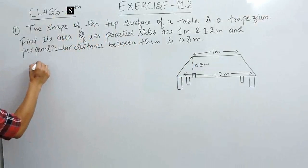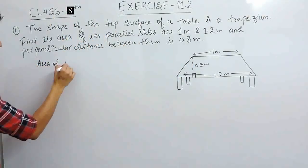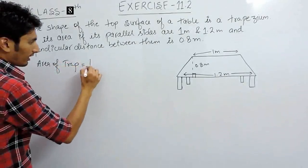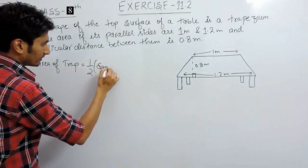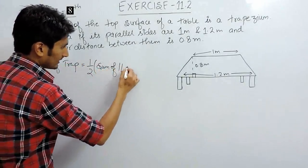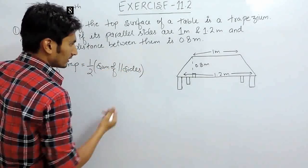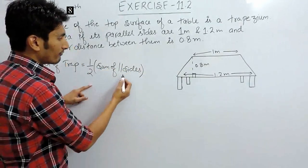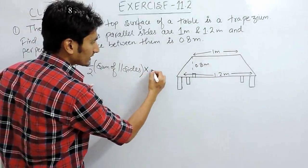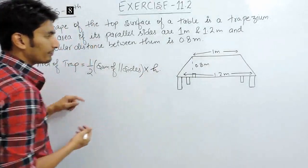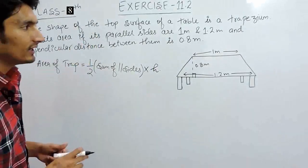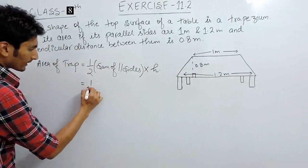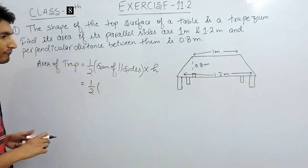We know that area of a trapezium is equal to half sum of parallel sides. This is the sign for parallel. So half sum of parallel sides multiplied by the shortest distance or the perpendicular distance between these two parallel lines. If we put the value in this equation which is half sum of parallel sides.